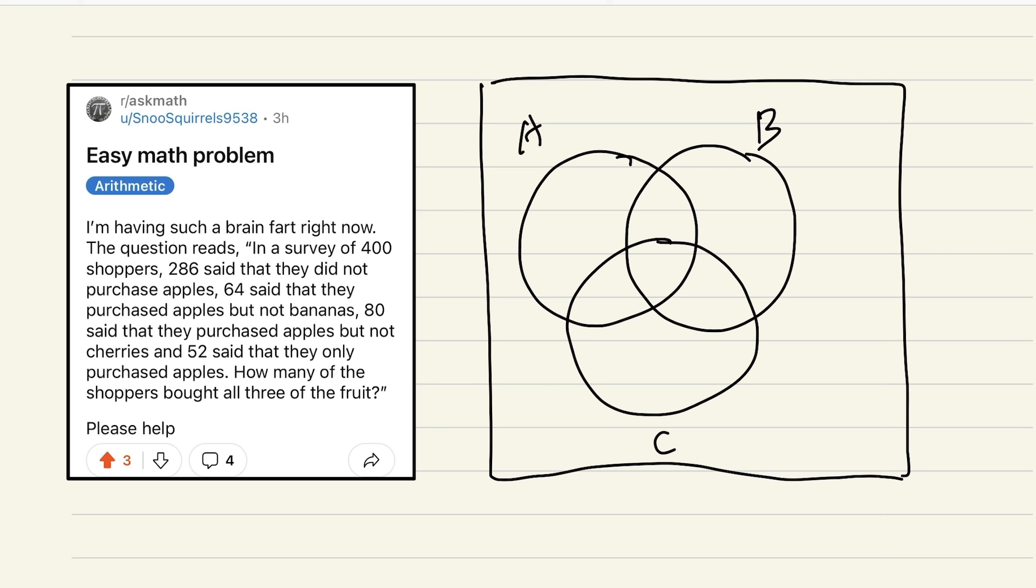And then let me also draw a box on the outside. Because here we have to consider the total, which is 400 shoppers. Alright, firstly, let's consider this. It says 286 said that they did not purchase apples.